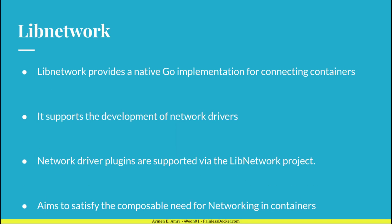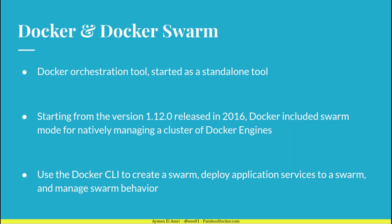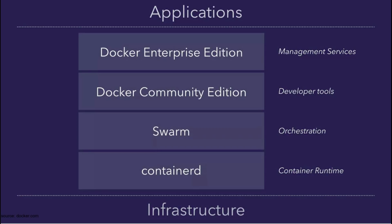The fourth component is libnetwork, a native Go implementation for connecting containers. It supports the development of network drivers and plugins and aims to satisfy the composable need for networking in containers. Docker Swarm is an orchestration tool built into the Docker engine. It started as a standalone tool and was natively included in Docker starting from version 1.12. It uses the Docker CLI to create a swarm cluster and deploy and manage applications and services.